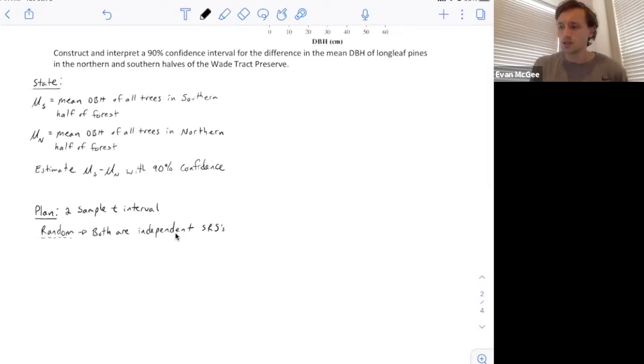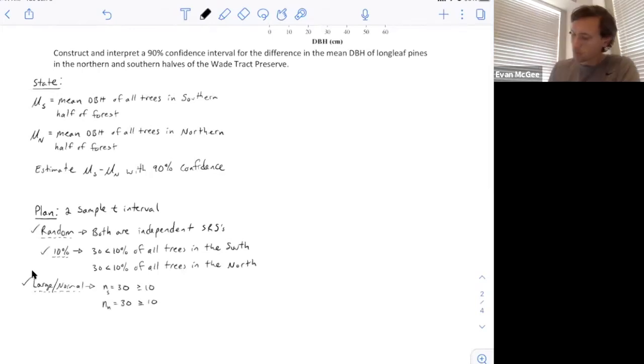Next, we check the 10% condition and the large normal condition. For 10%, it's safe to assume that 30 is less than 10% of all the trees in the north and south, or that there are more than 300 trees in both halves. The large normal condition is satisfied because our sample sizes are both at least 30, which means the sampling distributions will be approximately normal. All three conditions are met, so the sampling distribution of the difference will also be approximately normal.